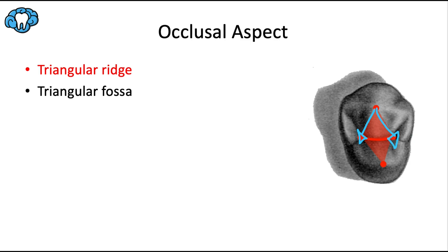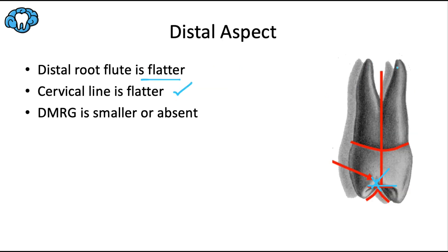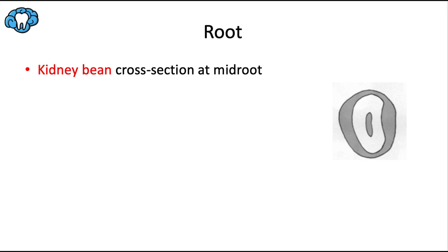There are also triangular fossae formed by the inner part of the marginal ridge and the triangular ridges from both cusps. Since we have two cusps, we expect two pulp horns. This is the only non-molar tooth that typically has two roots, so most often there are two pulp canals — sometimes only one if the roots are fused, or even three roots and three canals. These root tips are notorious for breaking off during extractions because the bifurcation is close to the apices, leaving very small root tips.